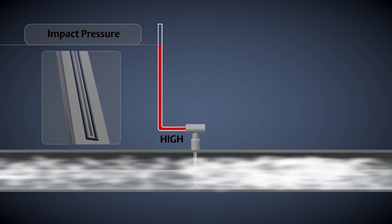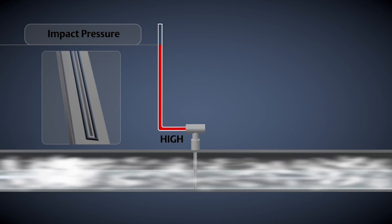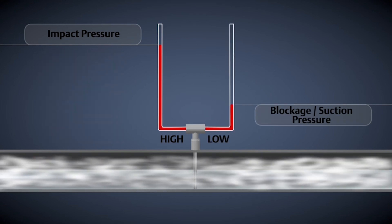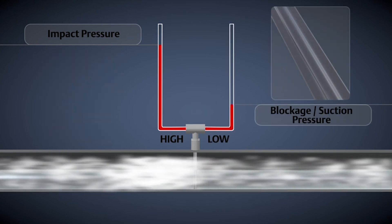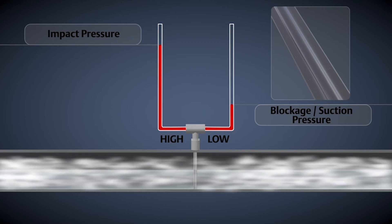This impact pressure is higher than the line static pressure. As the fluid flows past the bar, a low pressure is created on the back side. This low pressure is lower than the static pressure.